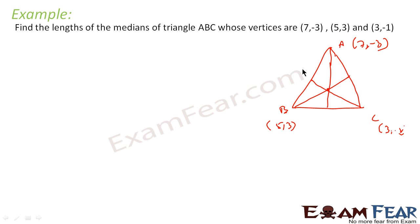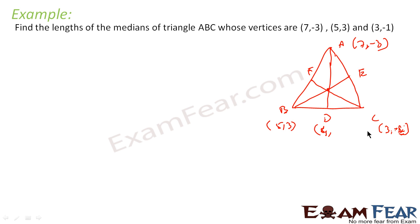To find the medians, we need the midpoints D, E, and F. D is the midpoint of BC, where B = (5, 3) and C = (3, -1). So D = ((5+3)/2, (3-1)/2) = (4, 1). We got point D as (4, 1).